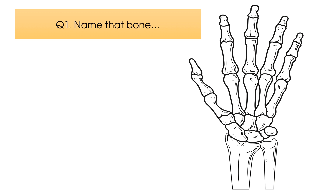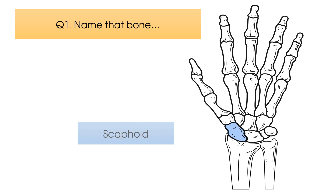Question number one: name the bone highlighted here in blue. Time's up. The bone highlighted is the scaphoid bone, which is located on the radial side of the wrist joint and forms part of the first carpal row.